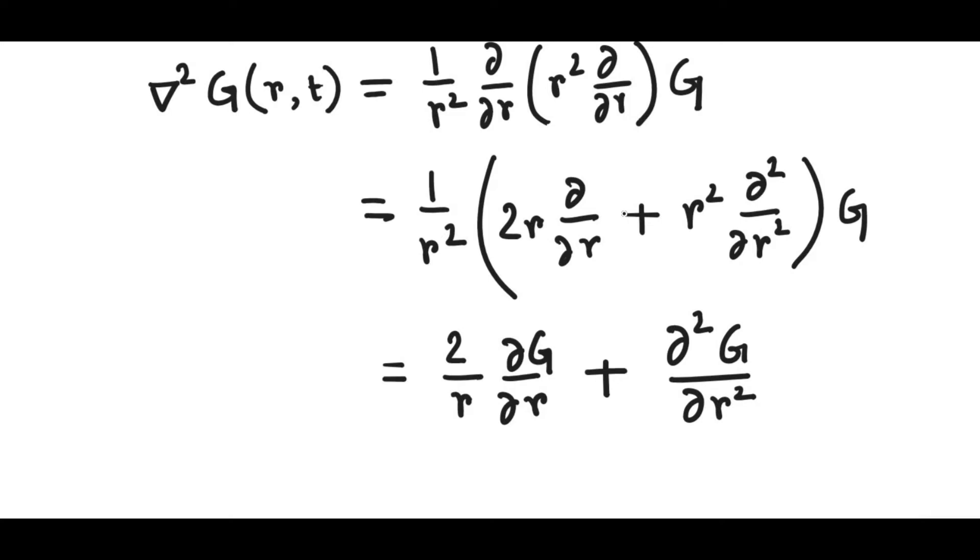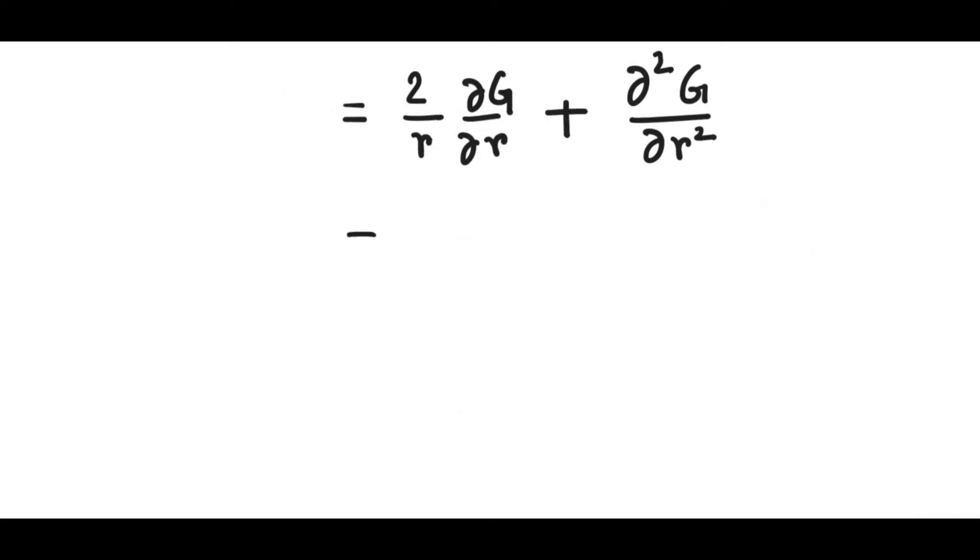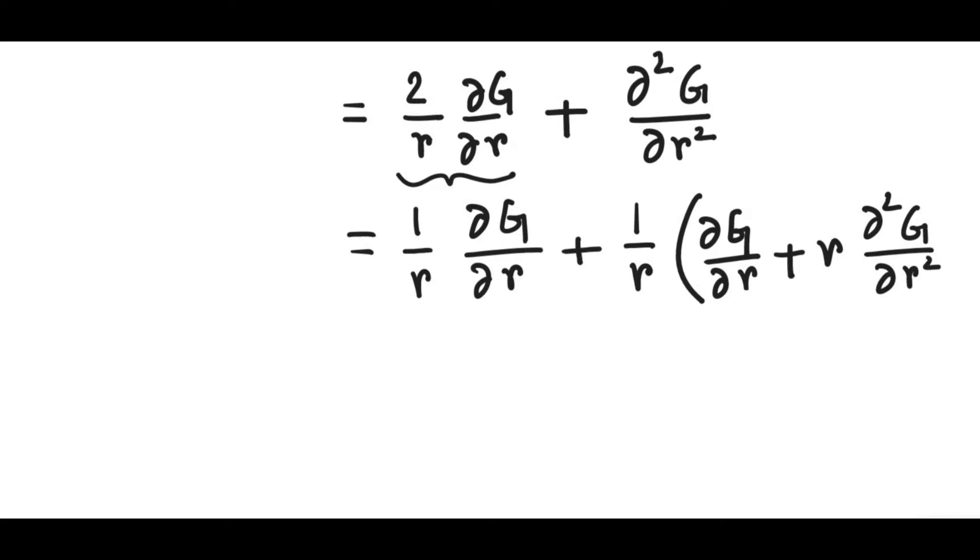Now, this is pretty straightforward, so here comes the trick. Let us write this term like follows. First we write one of the contribution and then we write the other half of the contribution, and then if I factor out 1 over R, what do I get? I get first order partial derivative of G with respect to R and then R times the second order partial derivative of G.